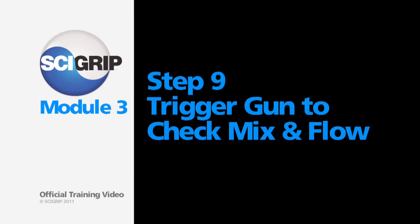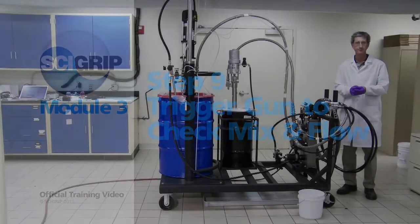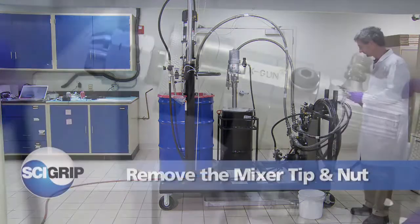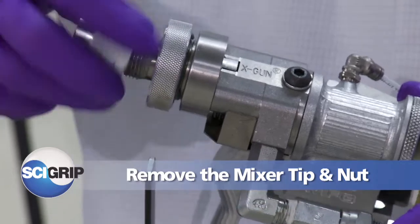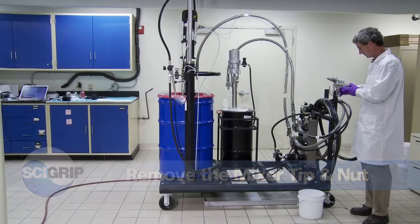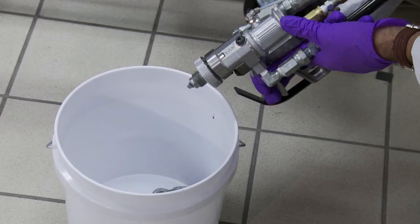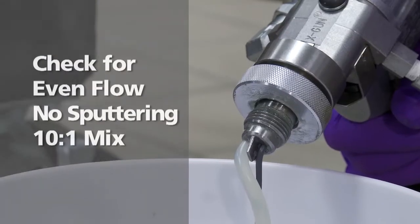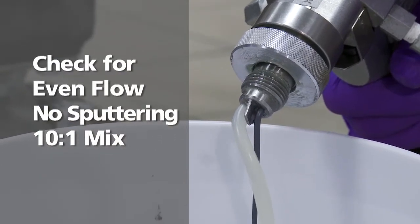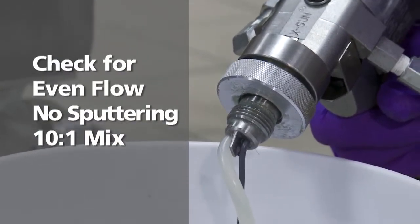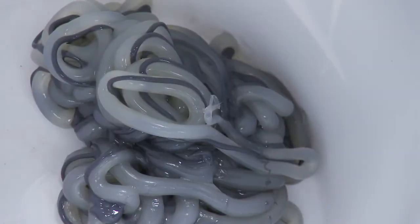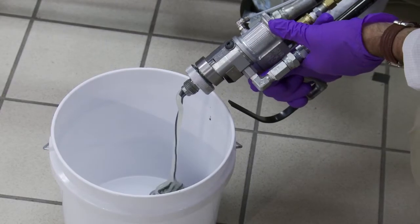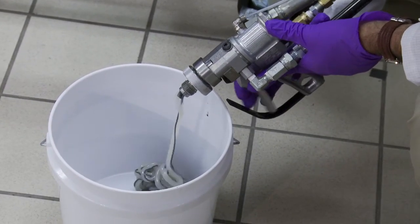Step nine, trigger the gun to ensure proper material flow. At this point, you'll put on gloves, remove the mixer tip, remove the mixer tip nut, and trigger the gun into a bucket or waste container and observe the flow of material through the port. What we're looking for is a steady even flow of the A and B components without any sputtering or color changes and a full flow from each orifice, the adhesive being larger and the activator being smaller for a 10 to 1 machine.